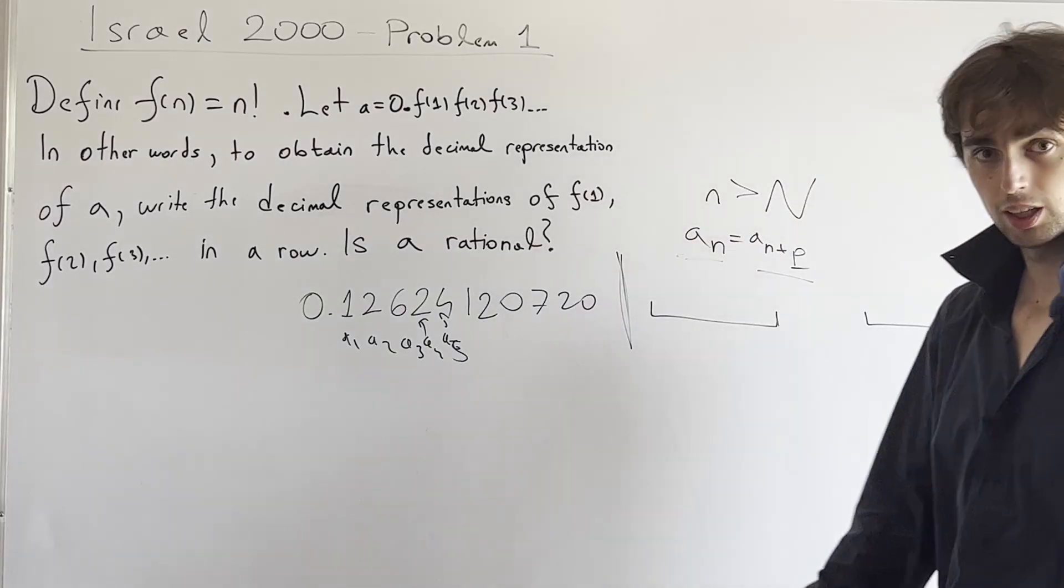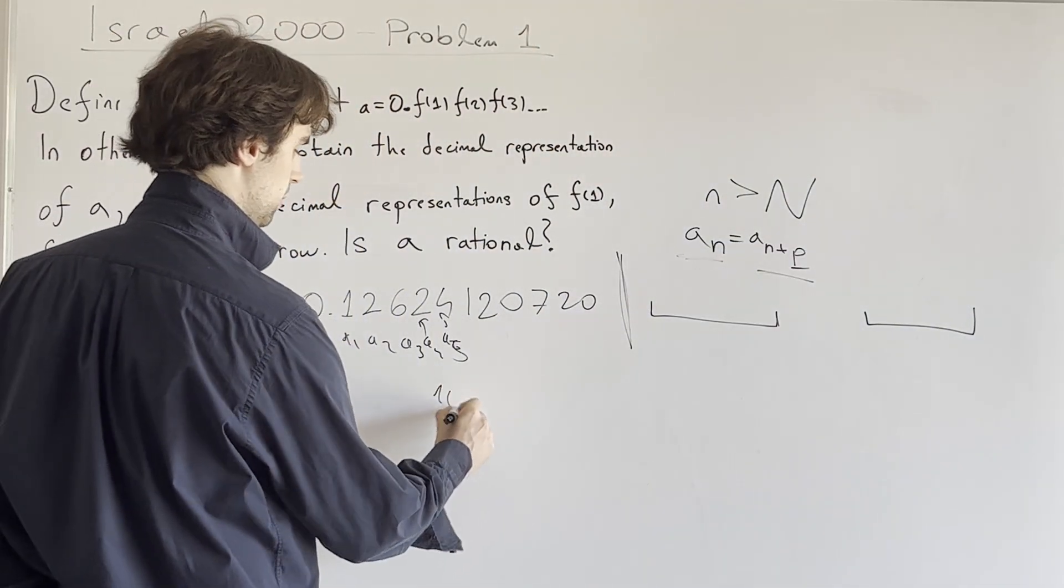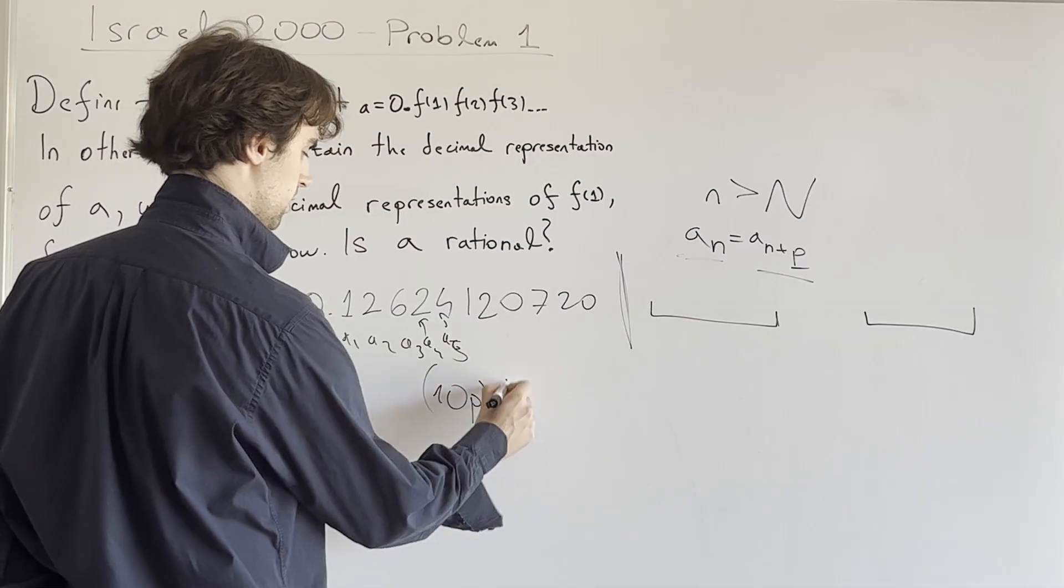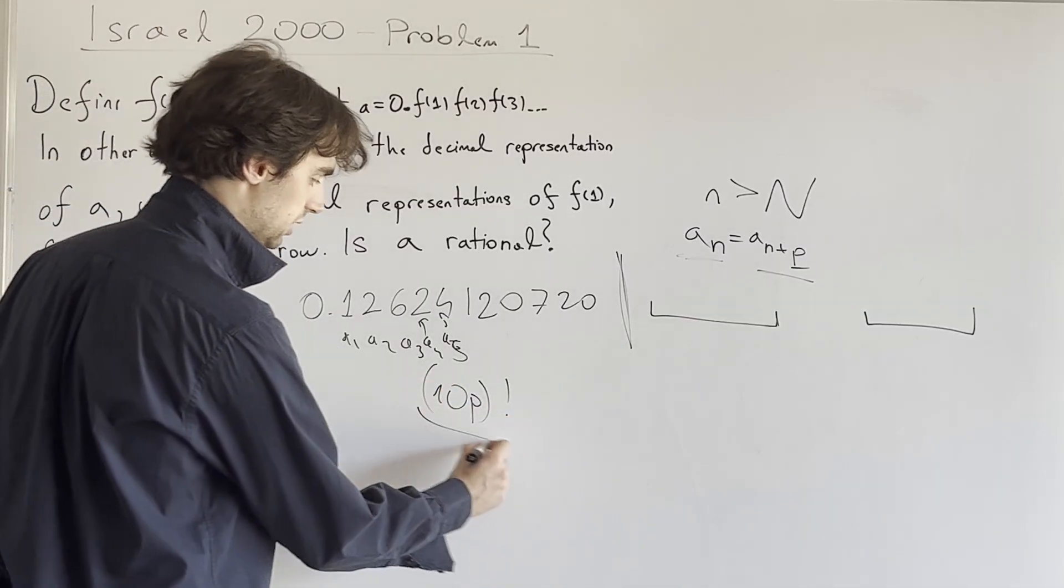And the answer is, well, we can pick for what's it called 10P factorial. This number is what? How many zeros does it have?